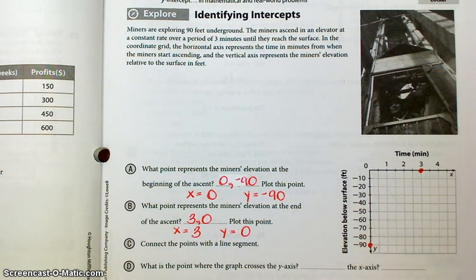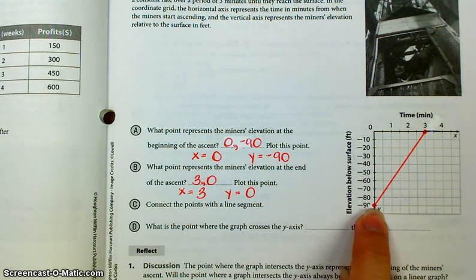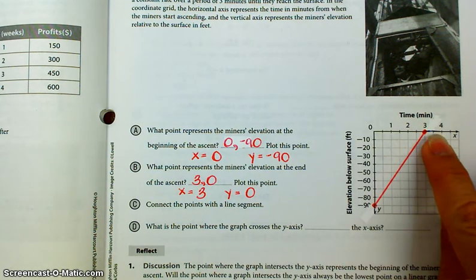And it says to connect the points with a line segment, so let me do that. All right, and then D says, what is the point where the graph crosses the y-axis? That's this point down here, because the y-axis is the vertical up and down. And what point does the graph cross the x-axis? That's this point right here.